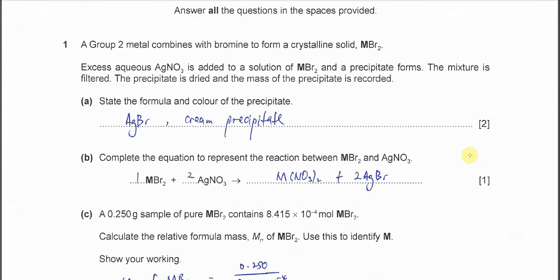A Group 2 metal combines with bromide to form a crystalline solid MBr2. After that, silver nitrate is added to the solution of MBr2 and a precipitate forms. Group 2 bromide is soluble. When the silver nitrate is added, silver will form a precipitate with bromide.